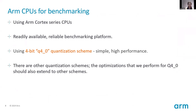For this talk we use ARM Cortex series CPUs for our benchmarking — these are a readily available, reliable benchmarking platform. Because these LLMs are really huge in size, they are typically aggressively quantized to 4-bit in order to ease bandwidth and footprint pressure, and even after such aggressive quantization the drop in quality is very marginal. While we use a 4-bit quantized LLM to drive this discussion, the optimizations I will show can very easily be extended to other quantization schemes as well.